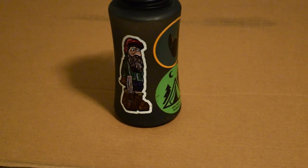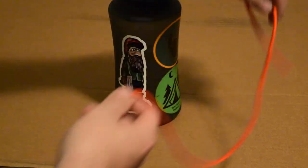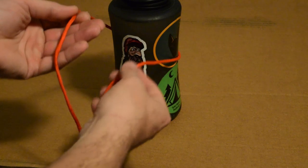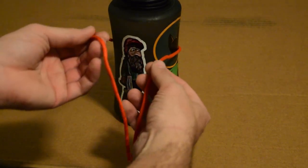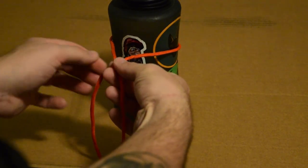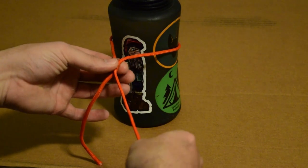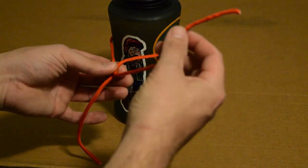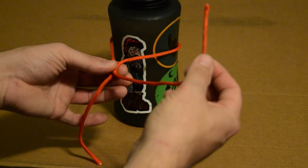Alright, so for our first knot is going to be the taut line hitch. All we're going to do is go around the tree, take the paracord that's on the left, cross that over on the top. We're going to take the running end, which is the one that we had put over top, as you guys can see right here on top of the paracord.